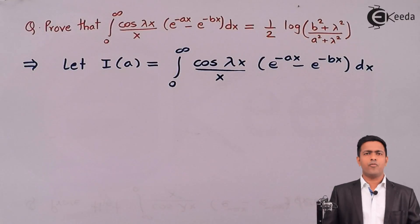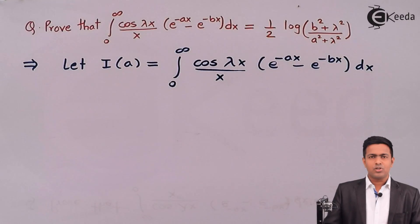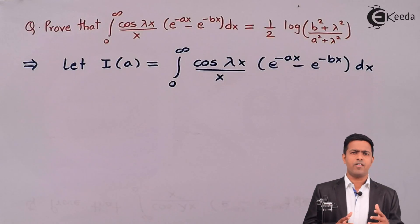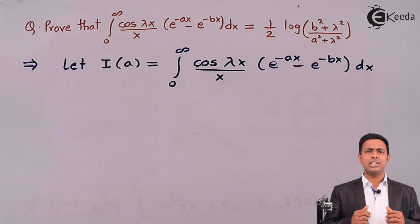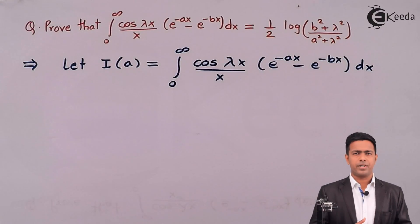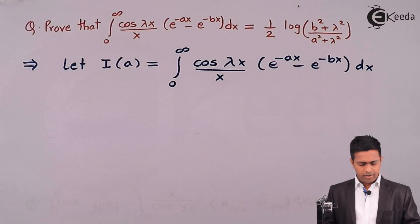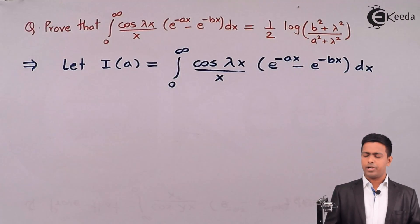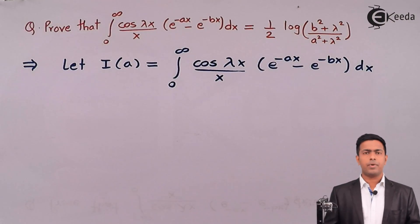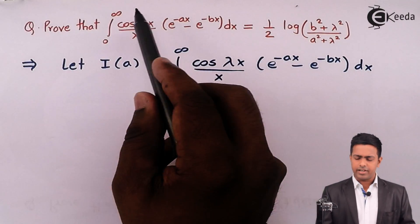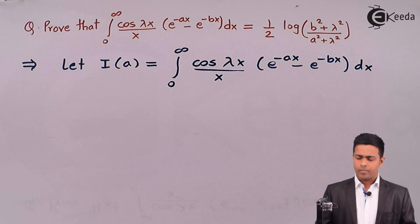Welcome to the concept of differentiation under integral sign. We have solved a couple of examples on the single parameter, and now it's time to see examples based on multiple parameters. Here we have a question where we have to prove that the value of this integral is (1/2) log of (b² + λ²) / (a² + λ²). In this integral we have two parameters, a and b.